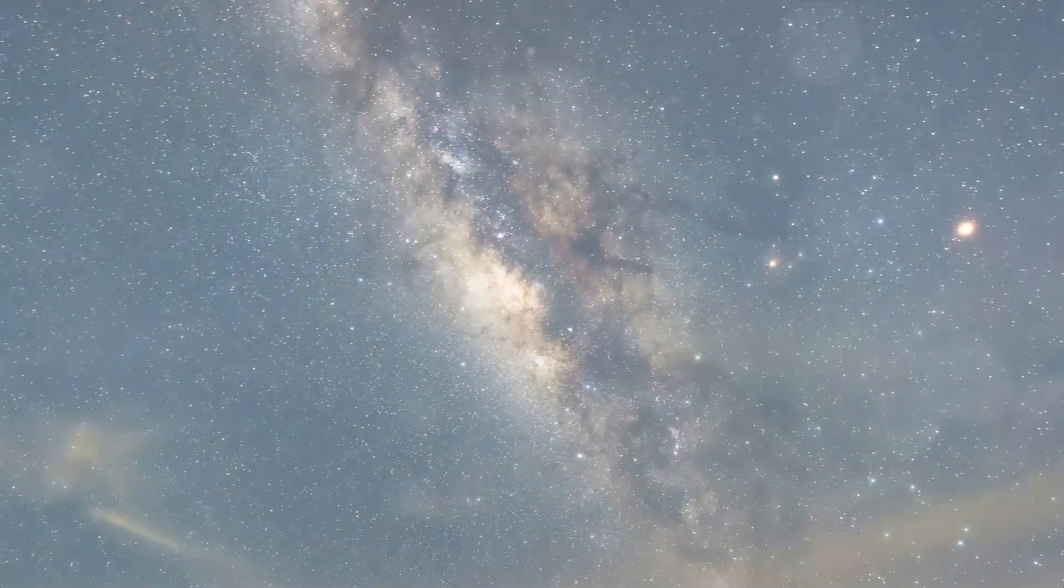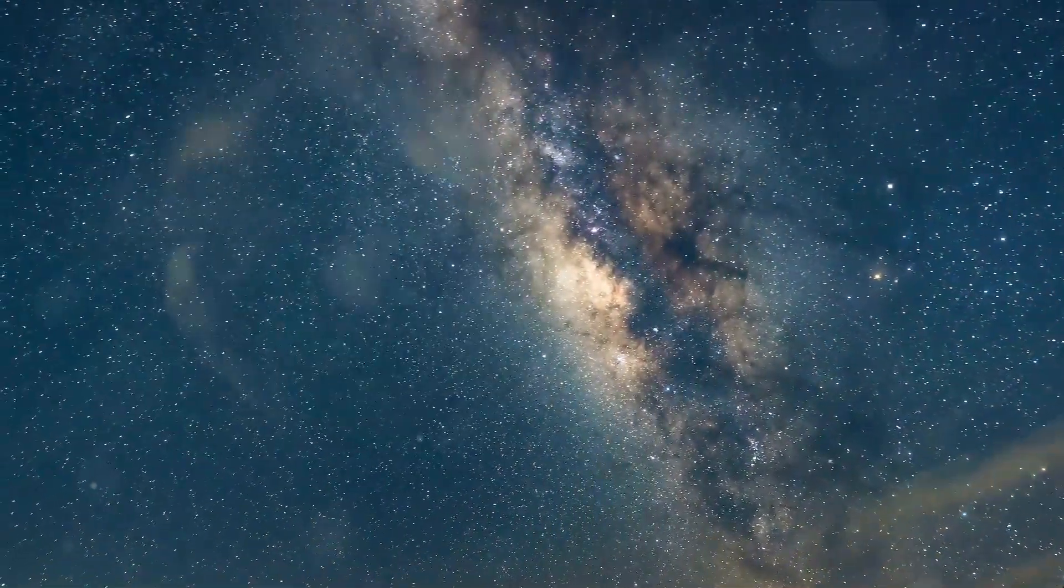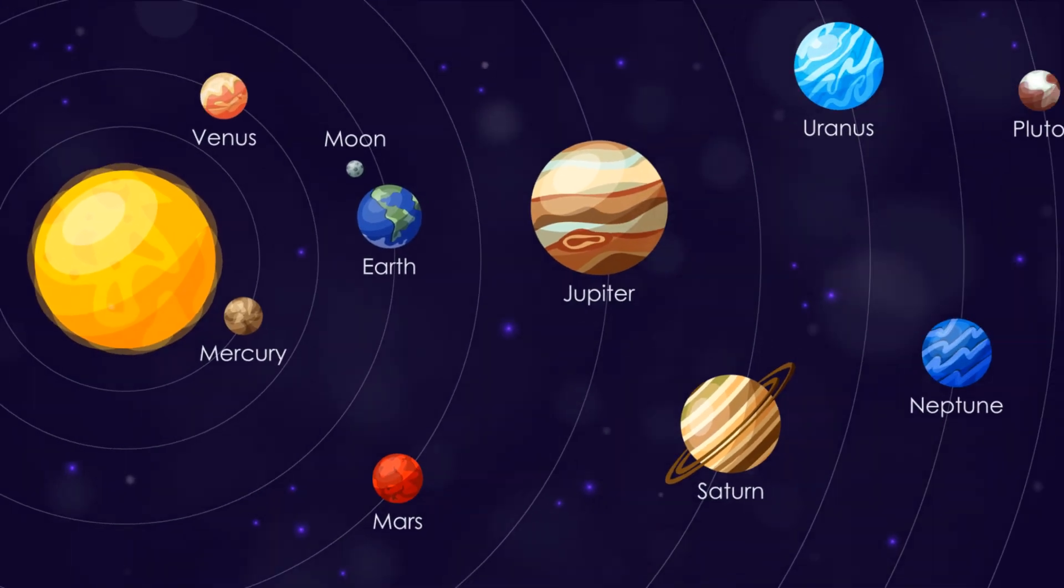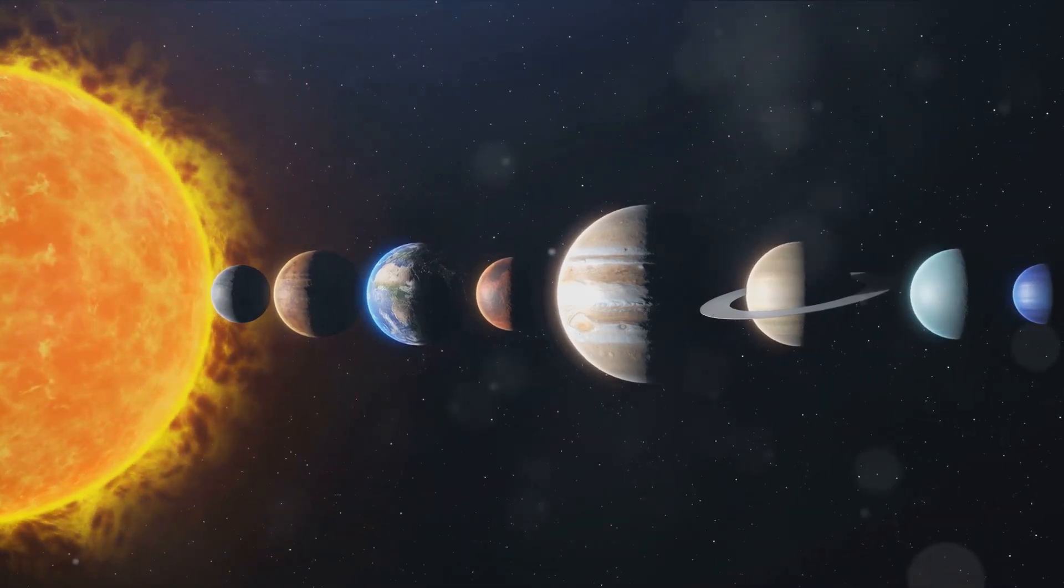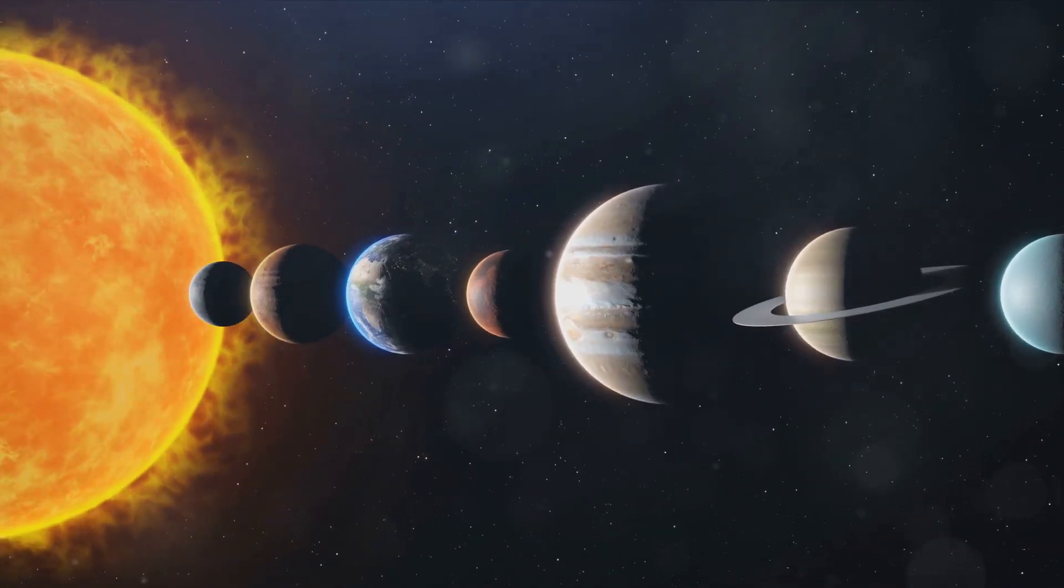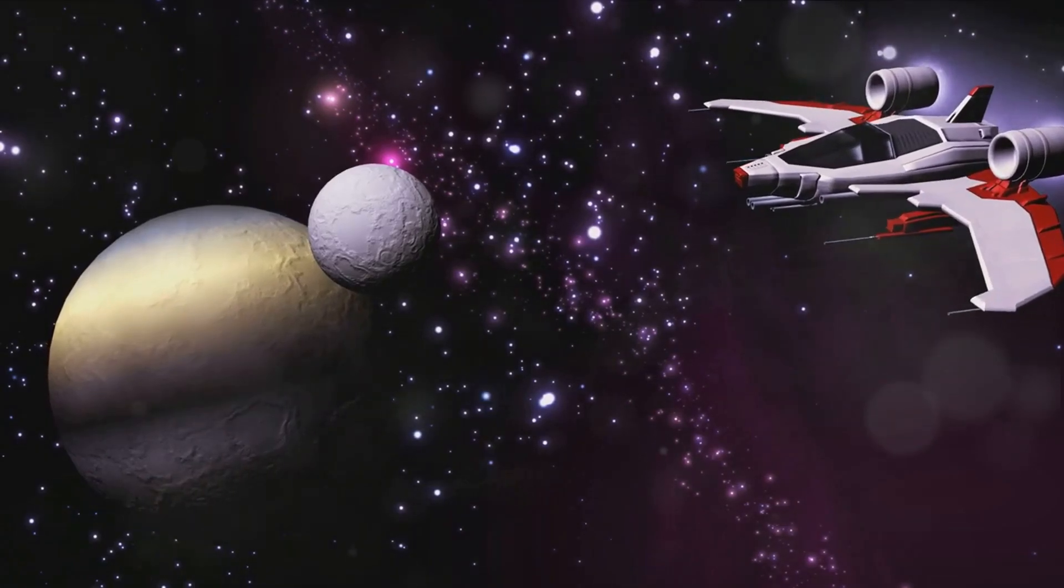Imagine the solar system as a cosmic car cruising along the galactic highway that is the Milky Way. This is not a leisurely Sunday drive. The solar system is constantly on the move, zipping through space at an average speed of 828,000 kilometers per hour. That's about 200 times the speed of the fastest car in the world, the Bugatti Chiron Super Sport.